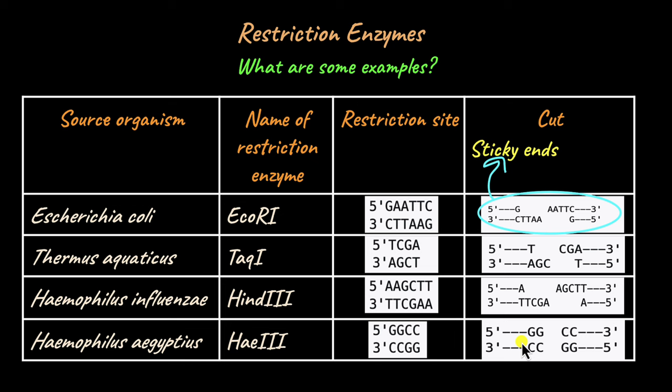In contrast, if you take a look at the cut made by HaeIII, you see it cuts right in the middle here. There is no overhang or extended sequence of DNA. Such a cut made by a restriction enzyme is known as a blunt end. Blunt because there is no overhang.